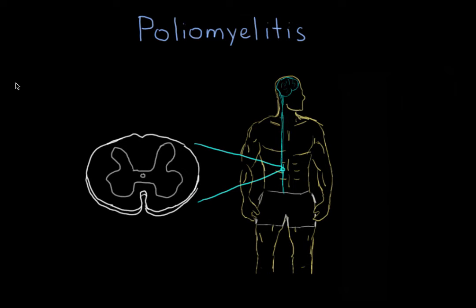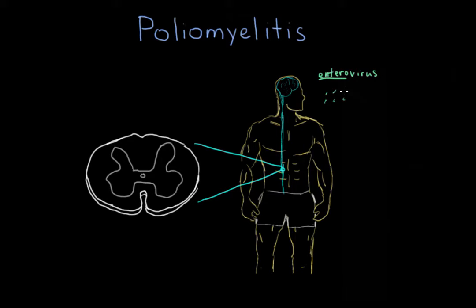The poliovirus is what's considered an enterovirus. An enterovirus is a sort of virus that likes to replicate in the intestines. This little virus will end up getting into the mouth of a patient, will be swallowed, and get into the intestines.